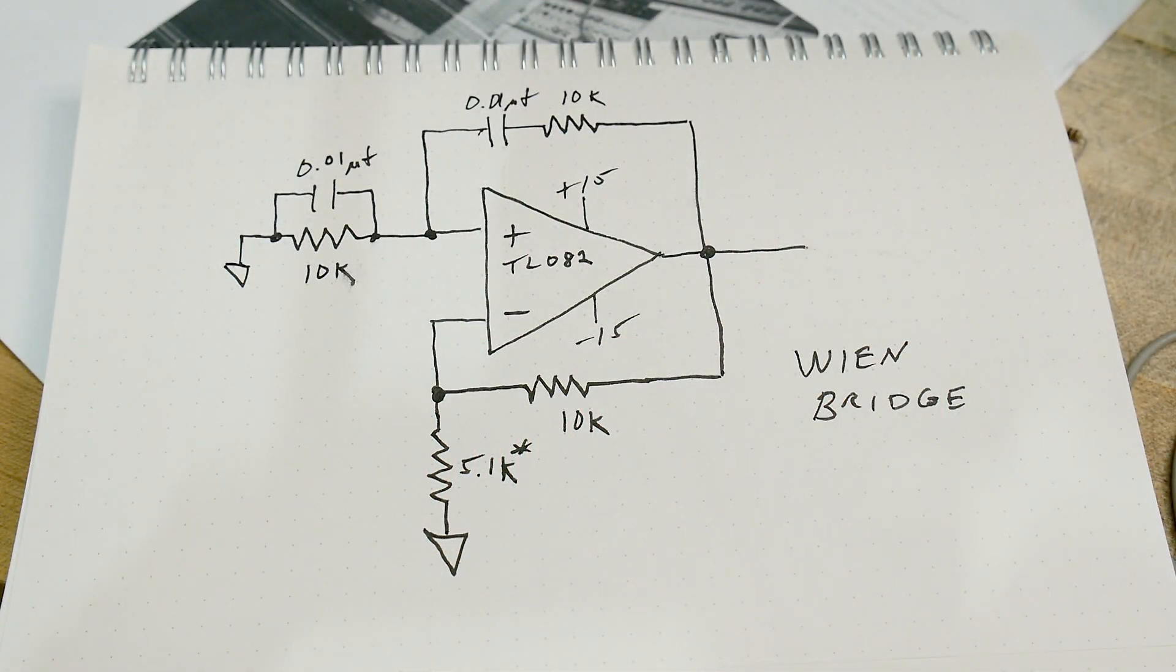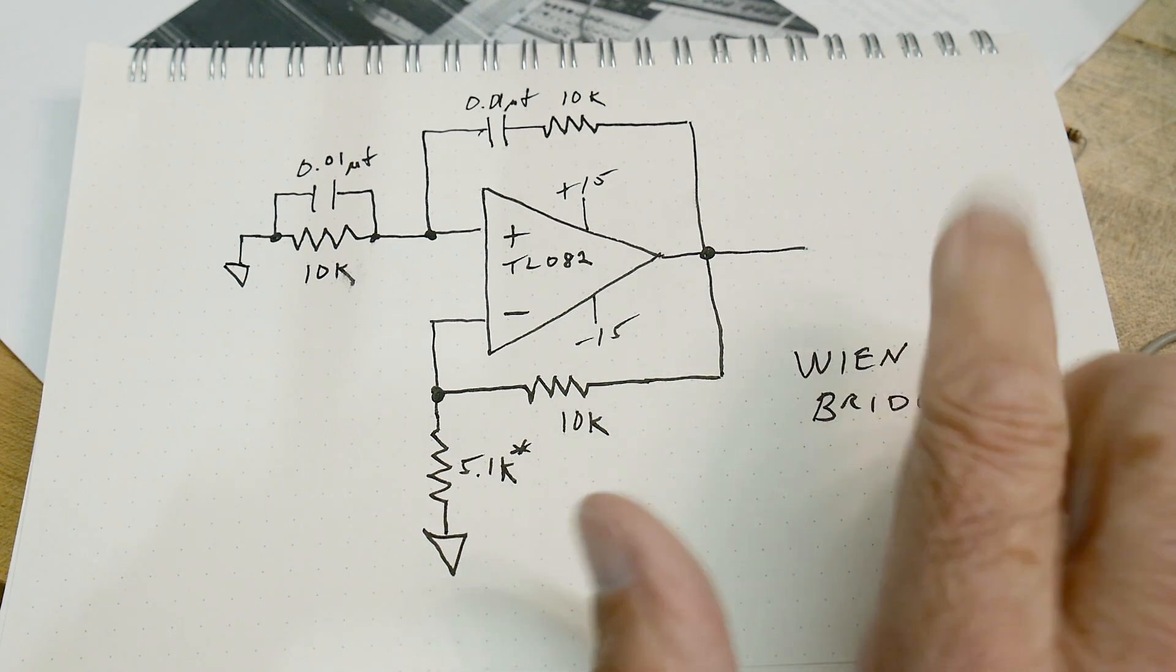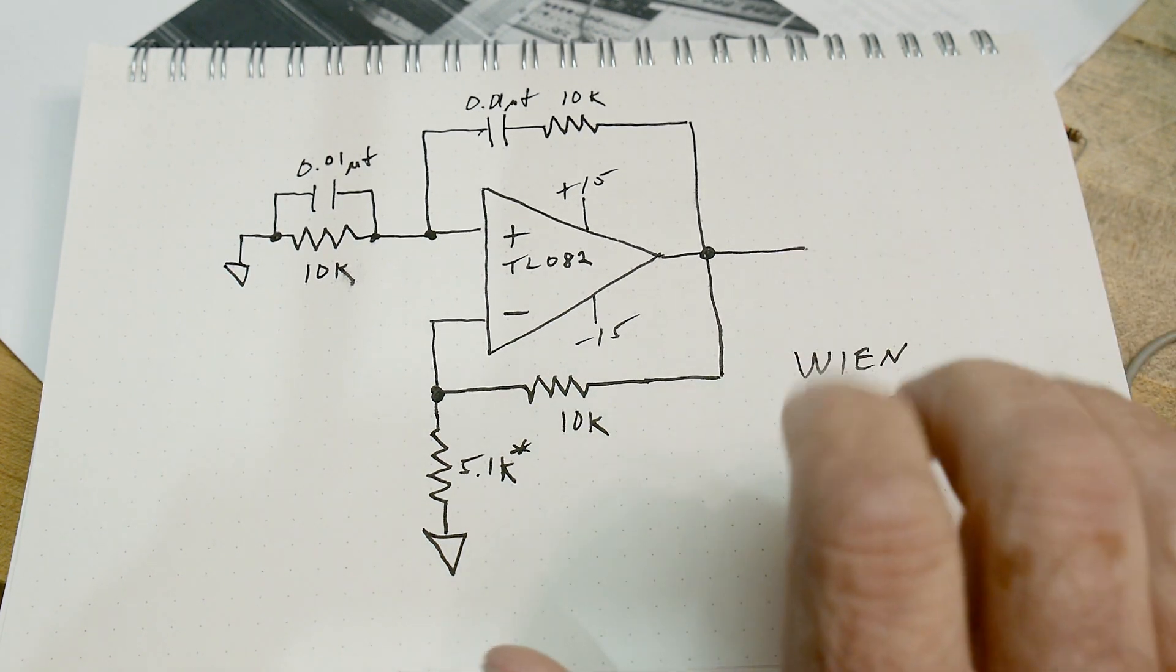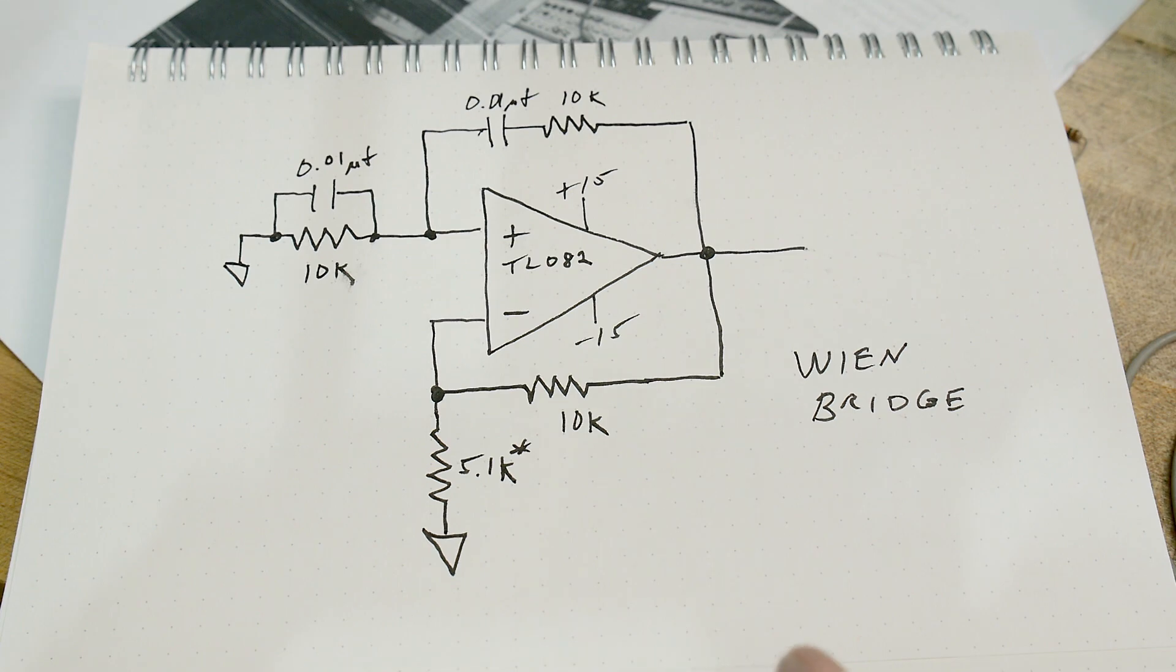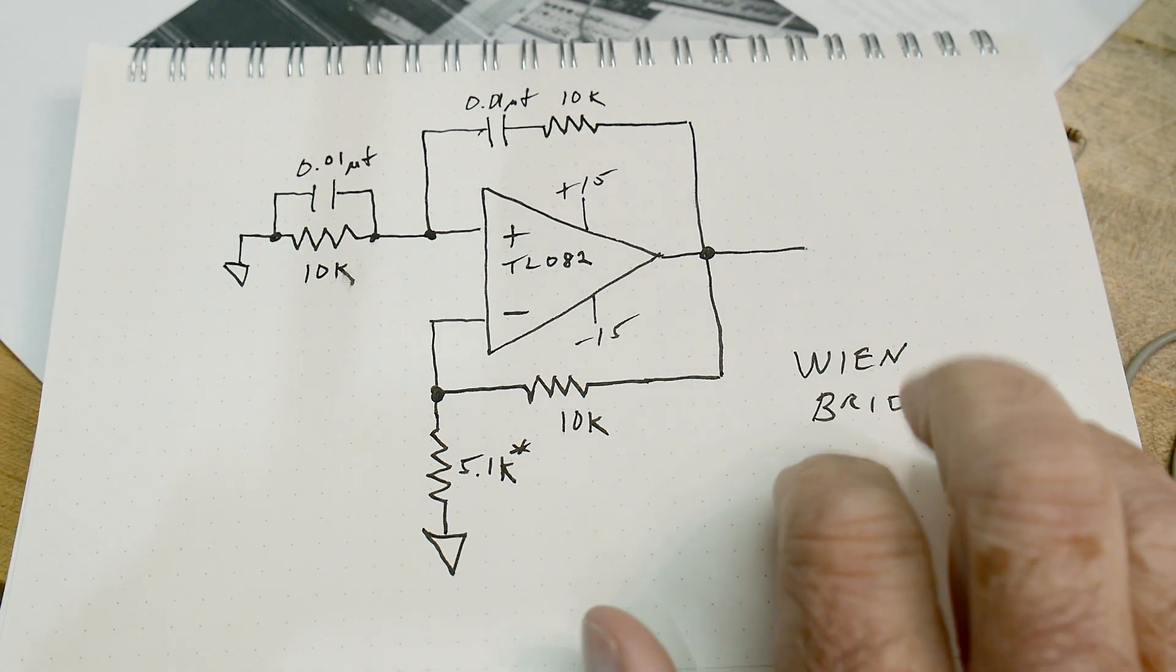All right, a quick circuit for the day. We're gonna be talking about a Wien Bridge oscillator. I learned it as, called it a Wien Bridge oscillator, but it's actually German. It should be Wien Bridge oscillator.